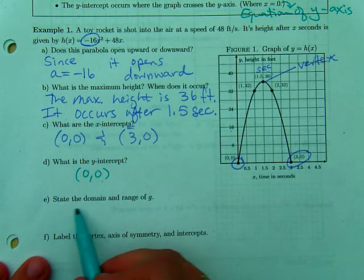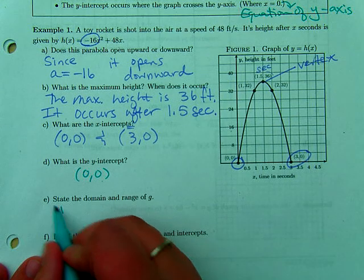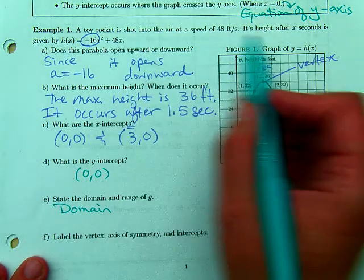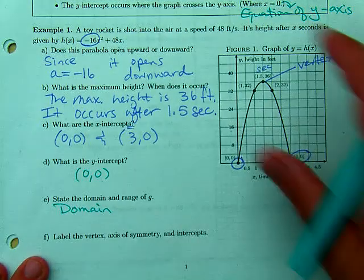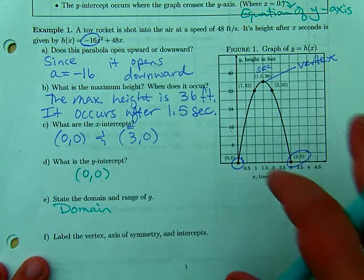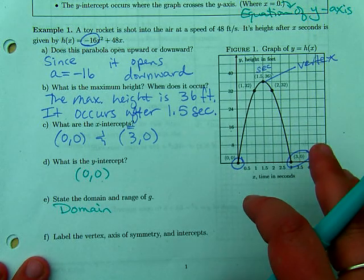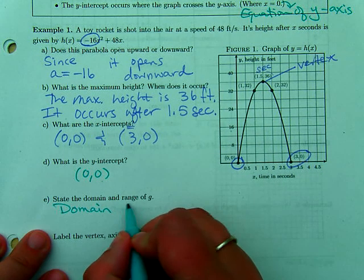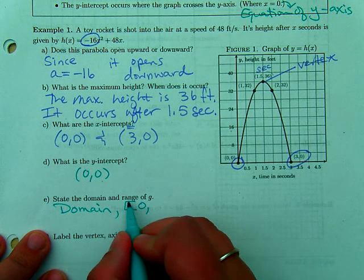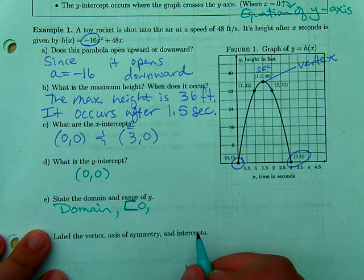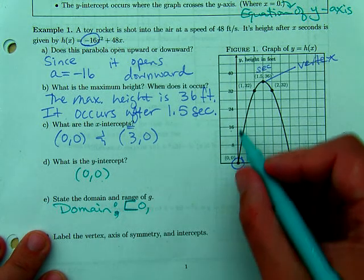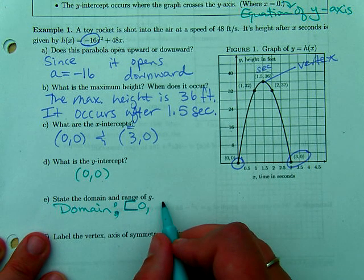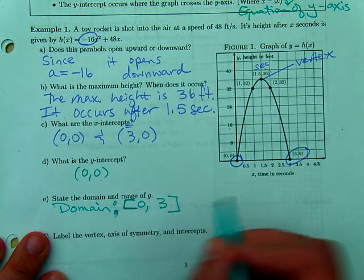State the domain and the range. The domain is the x values. The domain of the function is a little bit different than the domain of the actual word problem. We're talking about it in the context of the situation. When does the rocket get shot? It gets shot at zero seconds. And when does it land on the ground? Three seconds. So the domain is from zero to three, including both.